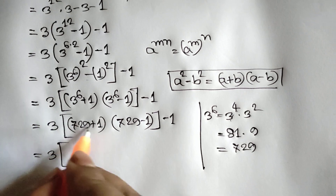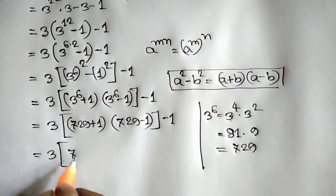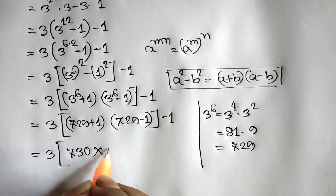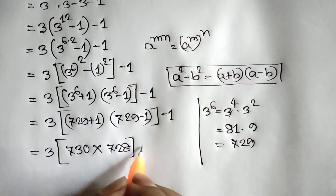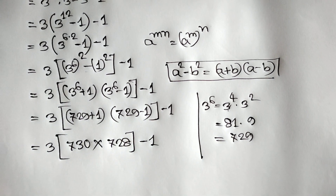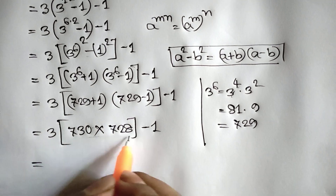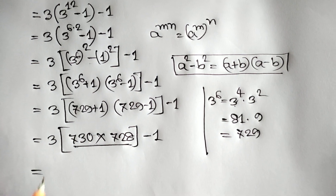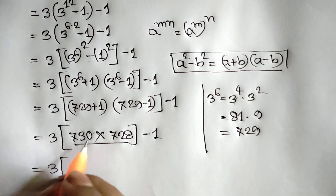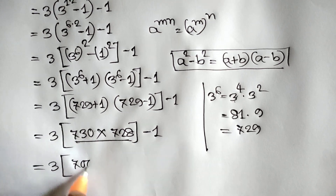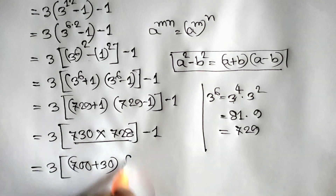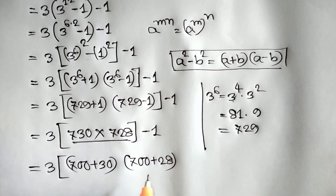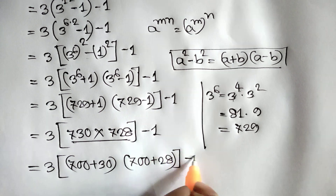So: 729 plus 1 means 730, times 729 minus 1 means 728, and this negative 1. Now we can multiply this simply. So we can write 3 times 730 — which can be written as 700 plus 30 — times 728, which can be written as 700 plus 28, bracket, and this negative 1.